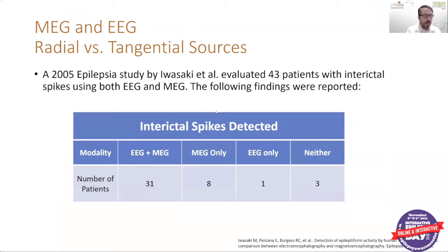Here is an example of how MEG and EEG work together. A 2005 study from epilepsy evaluated 43 patients to determine their interictal spike discharges using both EEG and MEG. Thirty-one patients' spikes were detected with both EEG and MEG, whereas eight patients' spikes were detected only with MEG alone, and one patient's spikes were detected only on EEG. You can see the advantage comes from using both EEG and MEG together.